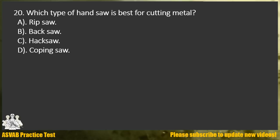Question 20. Which type of hand saw is best for cutting metal? A. Rip saw. B. Back saw. C. Hacksaw. D. Coping saw.